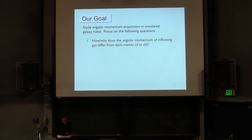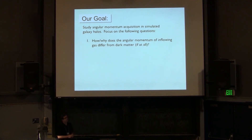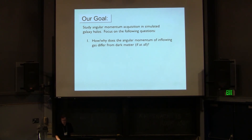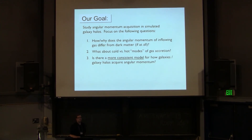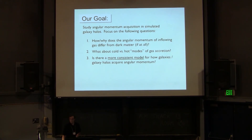The goal of what I'm trying to do is to look at this question: if the spin parameter of the gas in a halo is different from the dark matter, is that something that happens after it falls in or before? Does the specific angular momentum of the gas as it's falling into the virial radius differ from the dark matter, and if so, can we come up with a reason why? Is there a difference between hot and cold modes of gas accretion? And can we come up with a more consistent model for how galaxies build their angular momentum from the cosmic web to the galaxy?